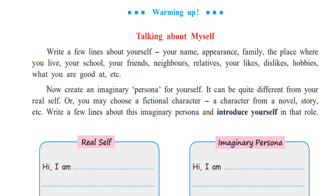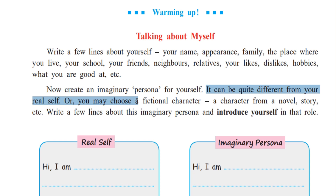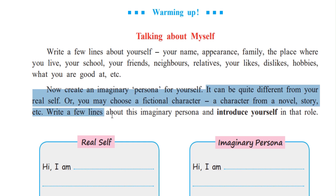So much to write, isn't it? Now, create an imaginary persona of yourself. We all like to be something else — we look up to some other person whom we admire. Maybe we want to become like that person. That person could be our role model. So, think about that person and think of that person as it being you and then introduce that person as yourself. It can be quite different from your real self, or you may choose a fictional character — an imaginary character, not a real character. This character could be a character from a novel, a story, etc. And write a few lines about this imaginary persona and introduce yourself in that role.